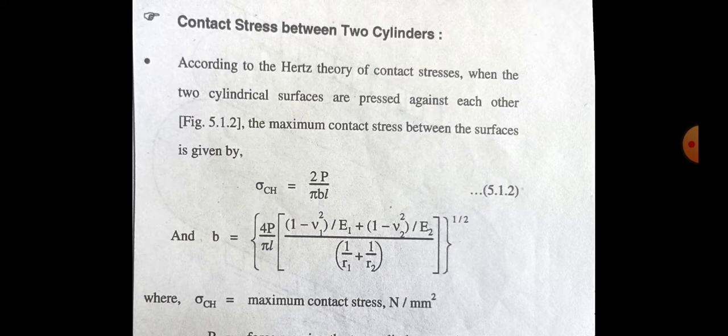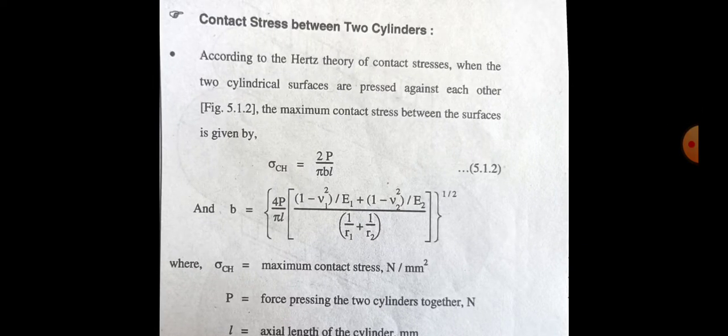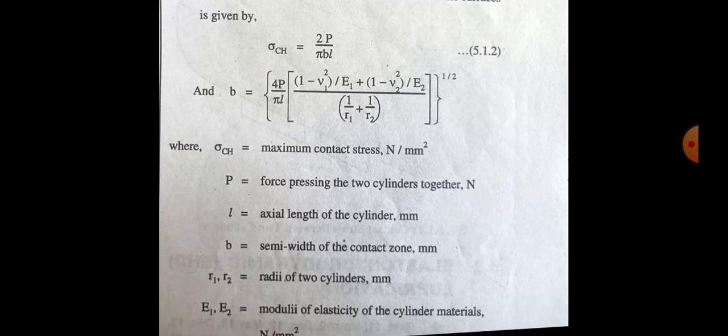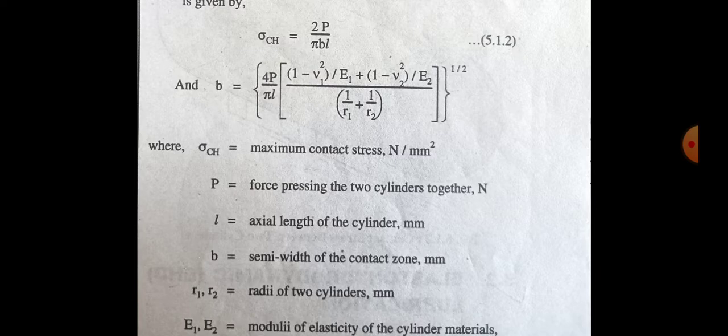For the contact stress of two cylinders: according to Hertz's theory, when two cylinders are pressed against each other, the maximum contact stress is σ_ch = P / (π × b × l), where b = √[4P / (π × l) × ((1 − ν₁²)/E₁ + (1 − ν₂²)/E₂) / (1/R₁ + 1/R₂)]. Here σ_ch is the maximum contact stress in N/m², P is the force pressing the two cylinders together, and l is the axial length of the cylinder.